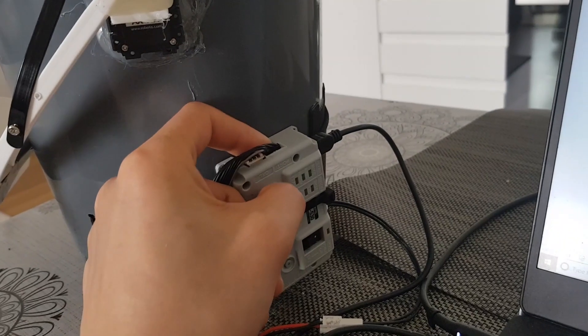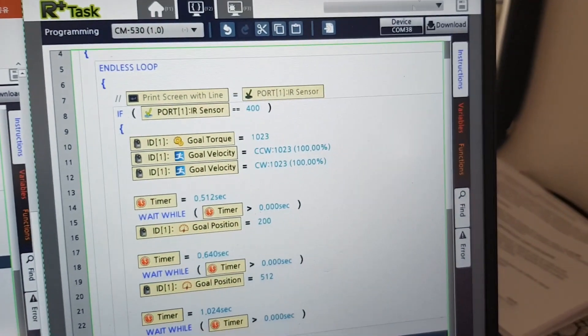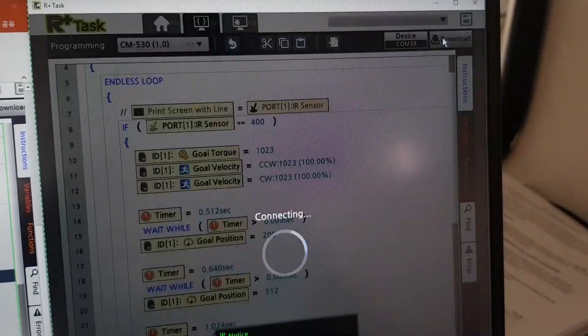When you are ready to download the code, press the download button and wait for a second. Then the robot is ready to go.